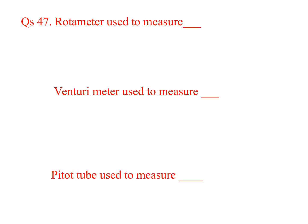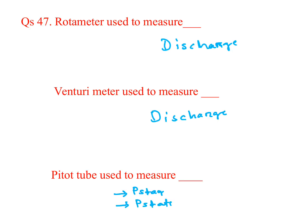Rotameter, venturimeter, and pitot tube are all important flow measurement instruments. Rotameter and venturimeter are both used for discharge measurement. The pitot tube measures, in order of priority: first, stagnation pressure; next, static pressure; then velocity; and finally discharge.